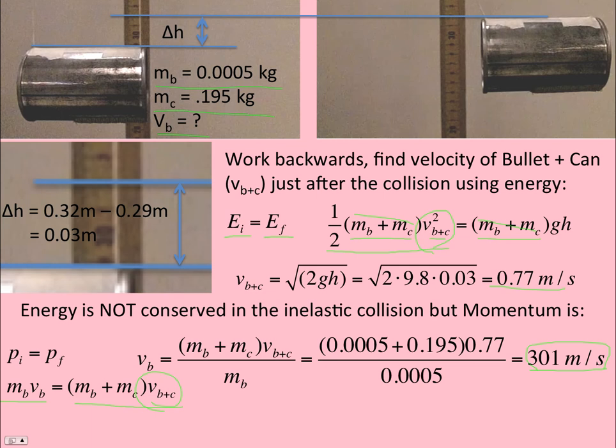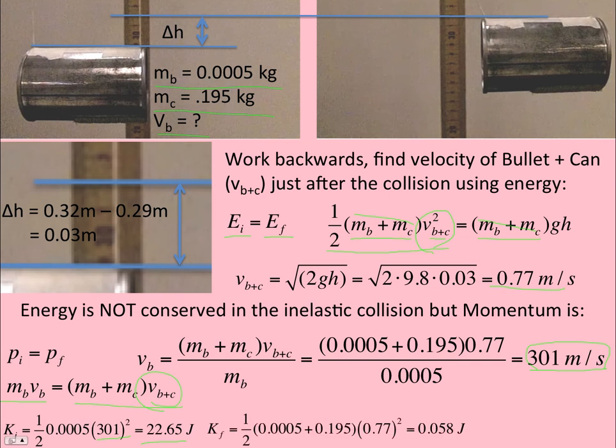Another typical thing that we'd ask in a collision like this is, what was the change in kinetic energy? And so the kinetic energy before the collision is just the bullet. And so now that we know its speed, I'm just using our predicted here, is 22.65 joules. After the collision, you can either do mgh, because we said they're equal, right, or 1/2 mv squared immediately after the collision. And so it comes out to only 0.058 joules. And so change is always final minus initial. So I get a negative 22.59 joules. So almost all the energy was lost. So you can see how wrong you would be if you assumed that the kinetic energy of the bullet before the collision equaled the potential energy of the can and the bullet at the highest point.